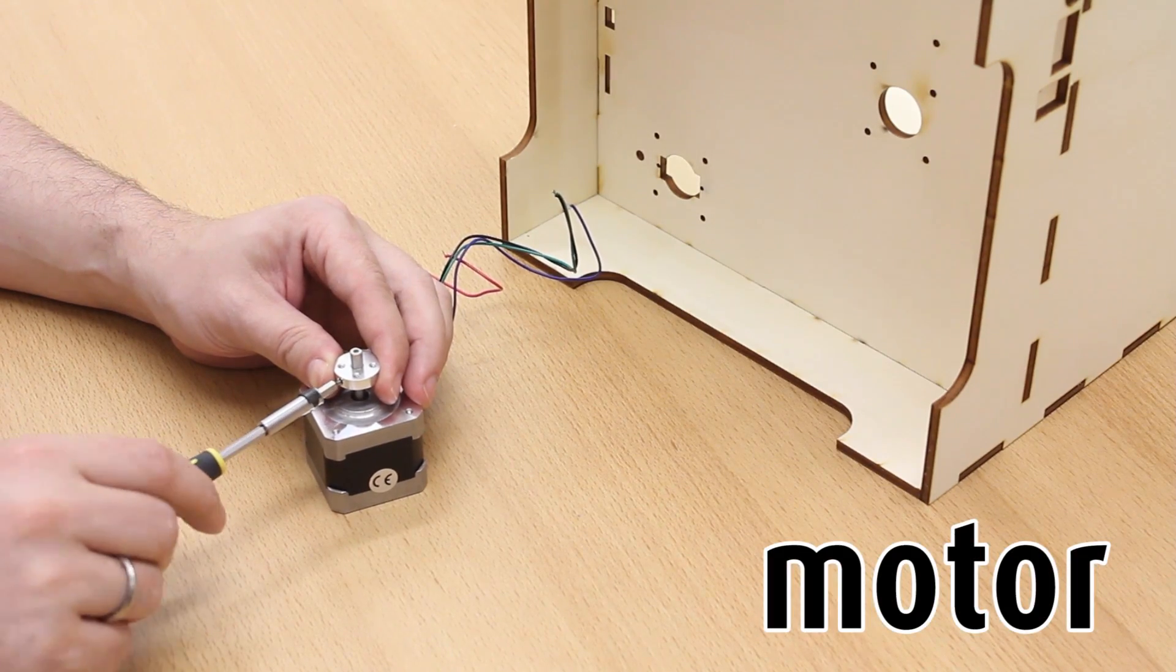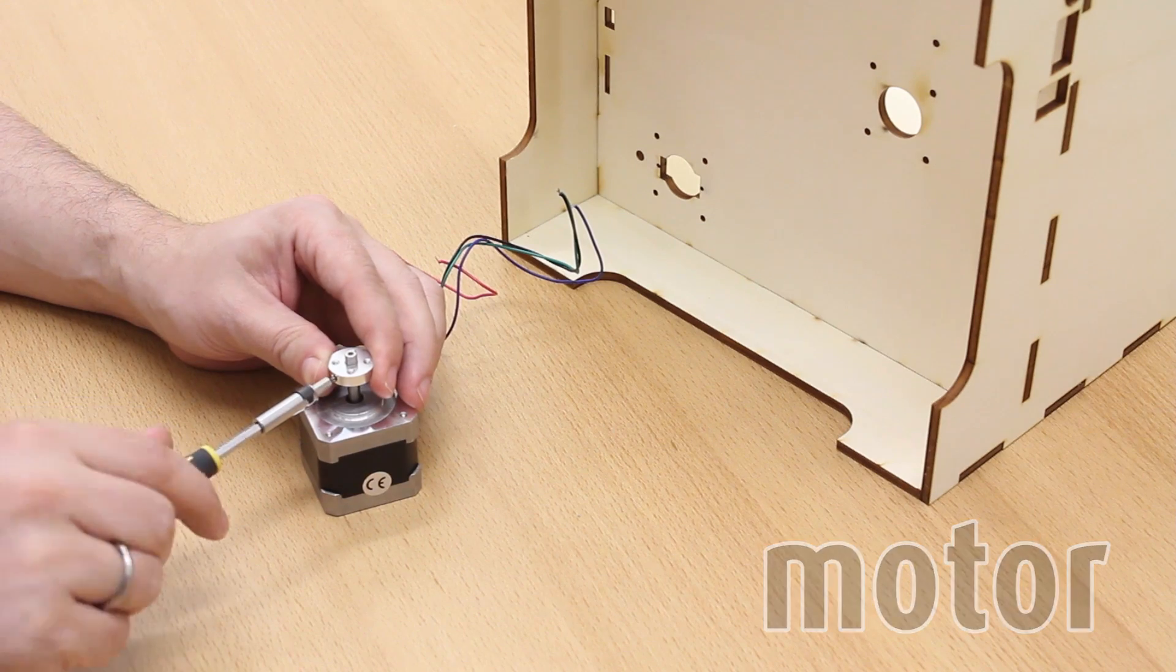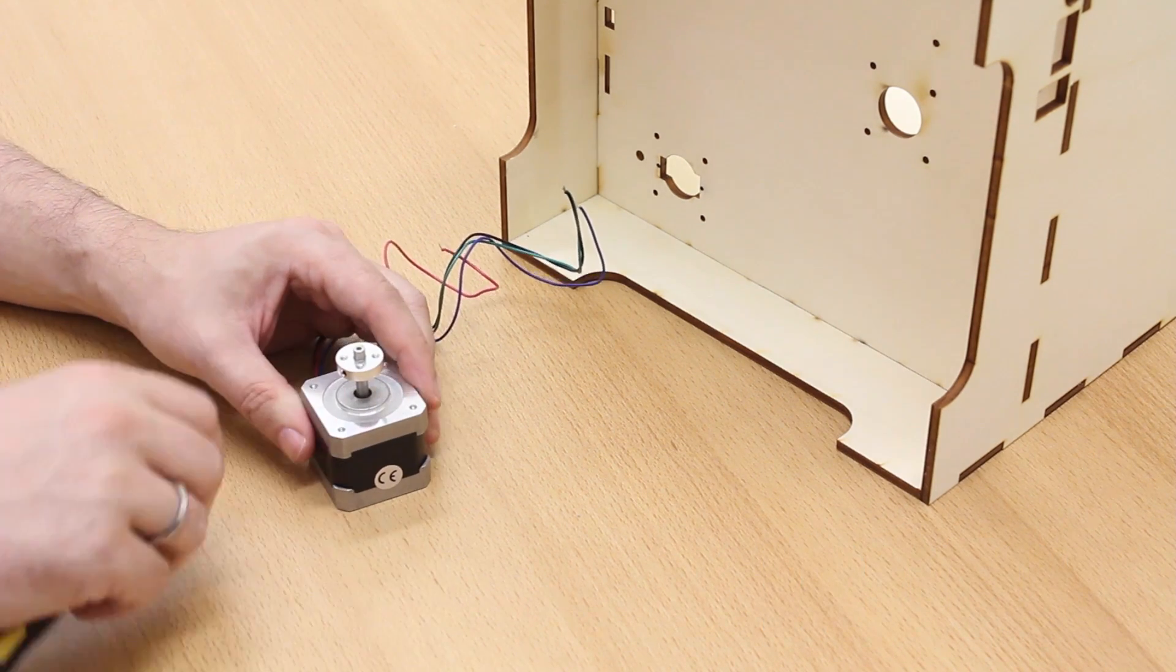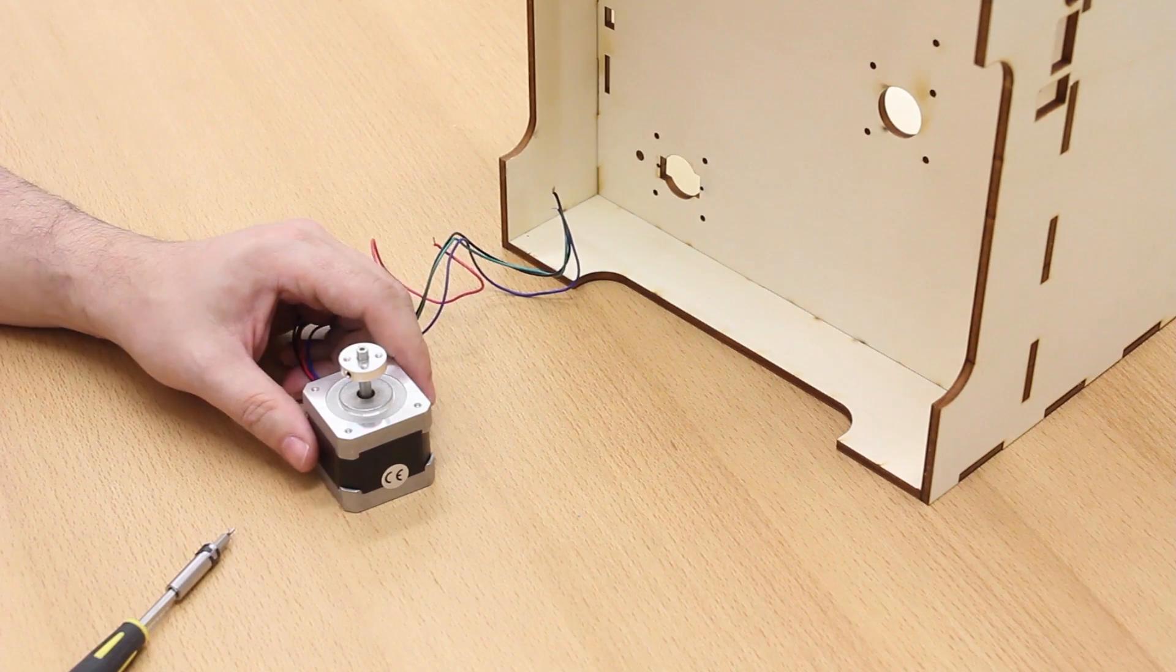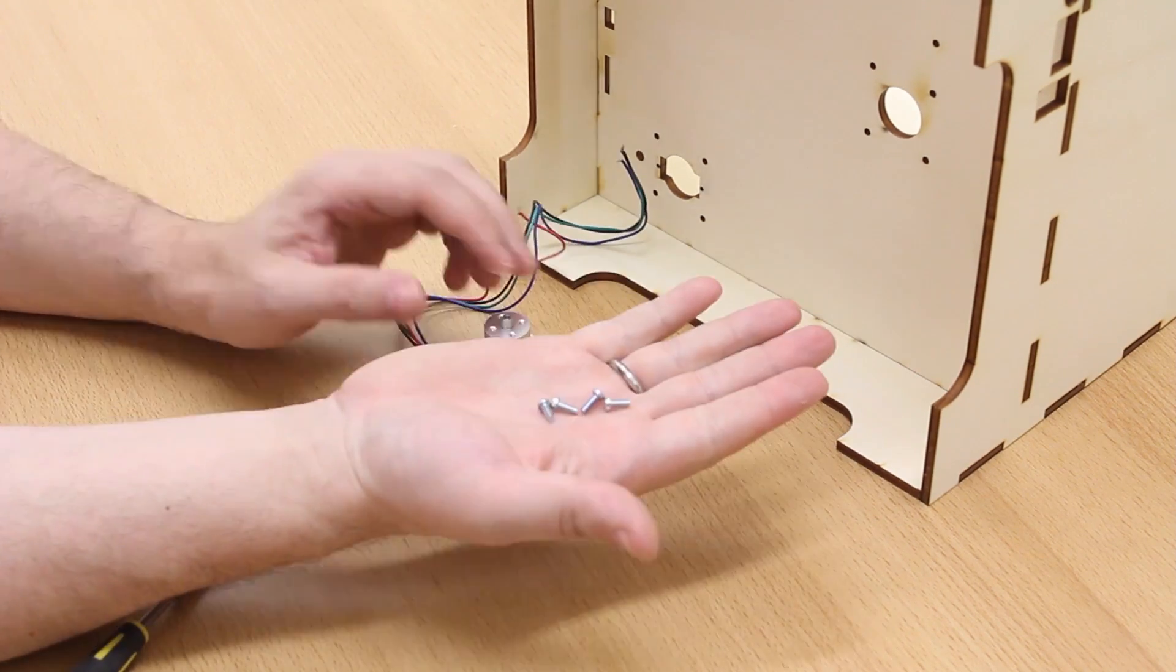We start with the motor. We add a mounting plate to it. This plate holds the turntable. And we secure it with a little screw.